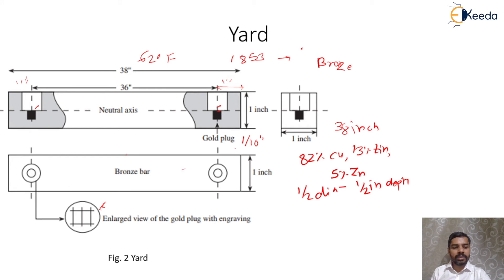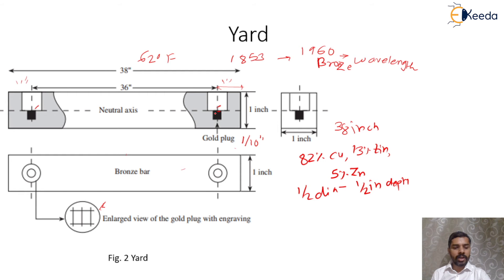The yard remained a legal standard until 1960, when it was replaced by the wavelength standard. The advantages of maintaining the gold plug at the neutral axis are: the axis remains unaffected due to bending, and the gold plug is protected from accidental damage. Errors at the neutral axis due to support at the ends can be minimized by placing supports such that end slope is zero and the flat end faces of the bar are mutually parallel to each other.